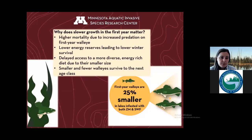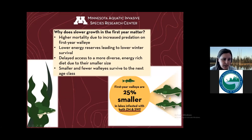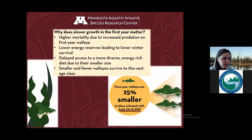Slower growth in the first year is a major concern for walleye populations because it means they have fewer prey choices — the smaller your mouth, the fewer prey items you can choose from. They're more vulnerable to predators, have lower energy reserves to survive the first winter, and all of these factors add up to decreased rates of survival in the long term. A special concern for the Boundary Waters is what might happen in lakes with both zebra mussels and spiny water fleas — the study found walleye are 25 percent smaller in their first year in those lakes. Lakes already under stress from climate change or other AIS can have those impacts compound with the addition of spiny water fleas.